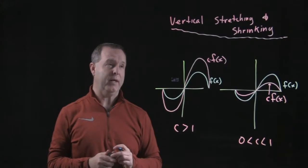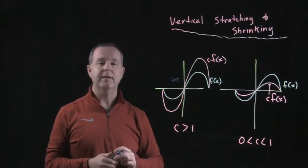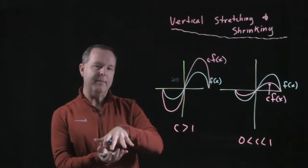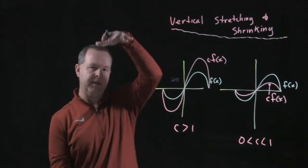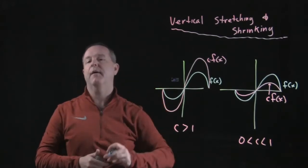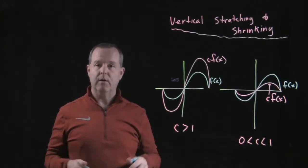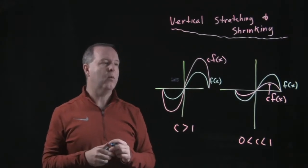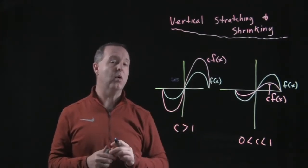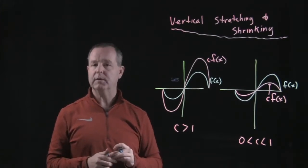Another type of transformation we can use is vertical stretching or vertical shrinking. That's basically where we take a graph and stretch it above the x-axis or squash it, shrinking it about the x-axis. To determine when that's happening, we look at the function and see if there's a constant being multiplied by that function — a function multiplier.